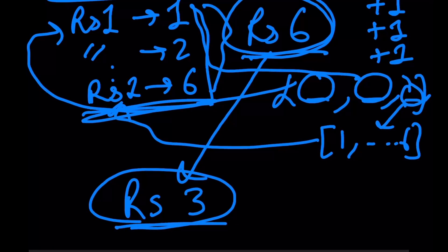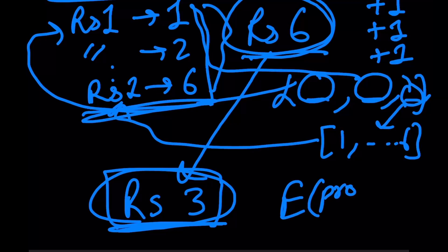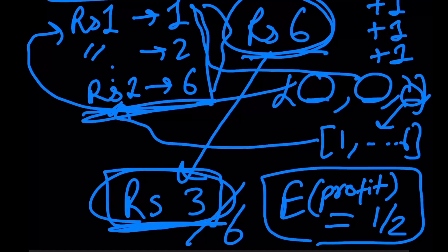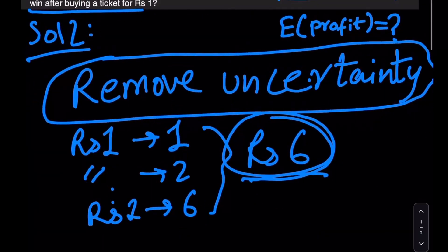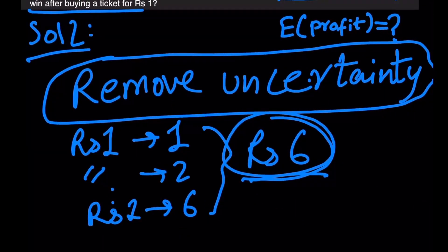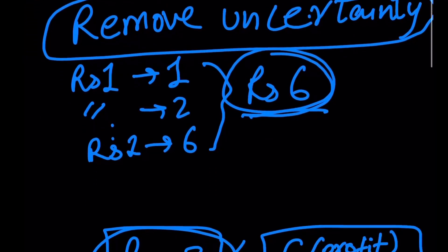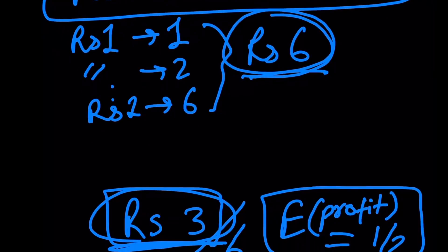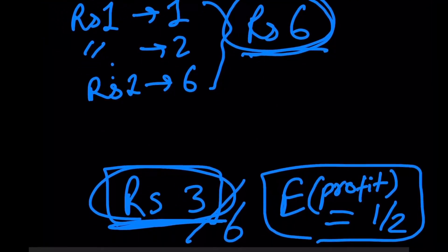And since we were playing six games, the expected profit for six games was three rupees. The expected profit for one game is going to be 3 divided by 6, which is going to be equal to 1/2, which is the same answer. Now just to clarify, the reason why this removes uncertainty and the reason why this type of solution is correct is because by playing six games and calculating the expected profit of those six games and then dividing it by six is perfectly simulating what we mean by an average outcome or an expected outcome.